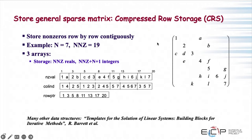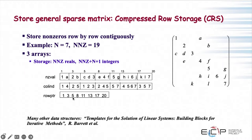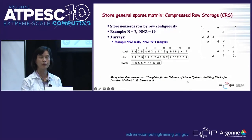The band solver is easier in terms of storage but asymptotically does much more work and stores more. For a general 7×7 sparse matrix with non-zeros on diagonals and various off-diagonals, we use Compressed Row Storage (CRS) or Compressed Column Storage — the most popular storage schemes. We store all non-zero values linearly, row by row, with a corresponding column indices array and a row pointer array indicating where each row starts in the linearized array.